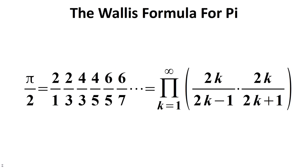This formula can be more compactly written in product notation. This is the product of 2k divided by 2k minus 1 times 2k over 2k plus 1, where k runs from 1 to infinity.